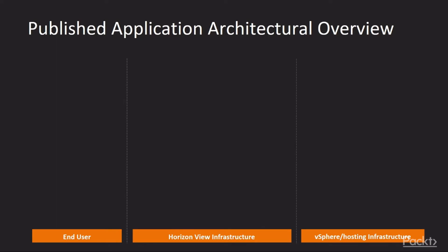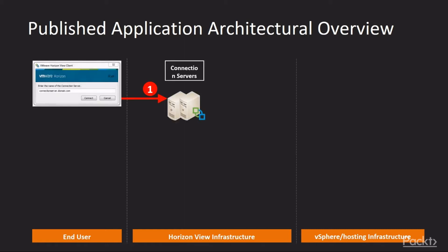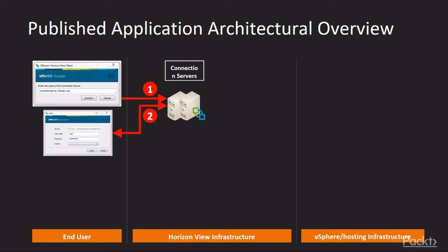So how does the hosted application feature work? Let's take a look at a high level. As with connecting to any VIEW-delivered virtual desktop machine, you launch the VIEW client and log into the connection server by entering the server details. The connection server responds with a login box. When you enter your username and password, this is returned to the connection server, and the credentials are then authenticated against Active Directory. Once authenticated, the client sends a GetLaunchItems request to the connection server to retrieve a list of all the entitled application sessions, applications, and desktops for that user.